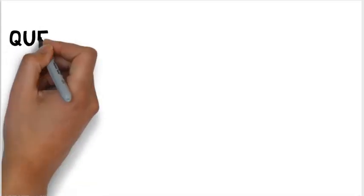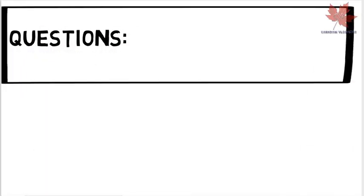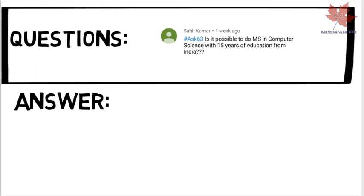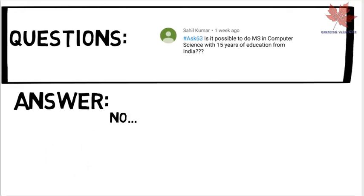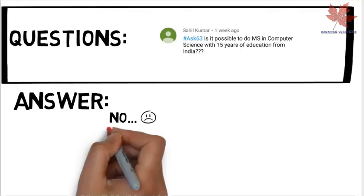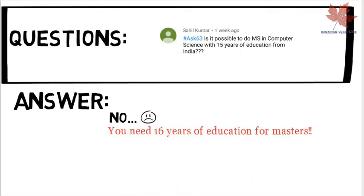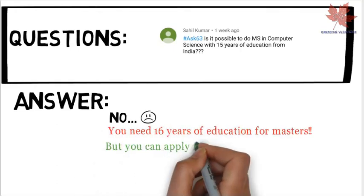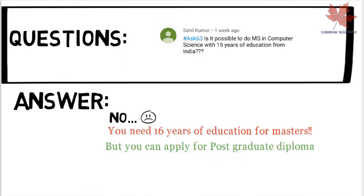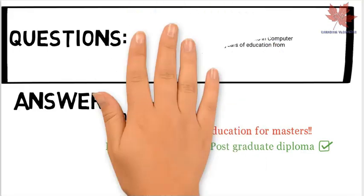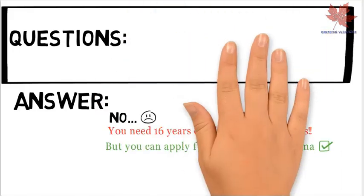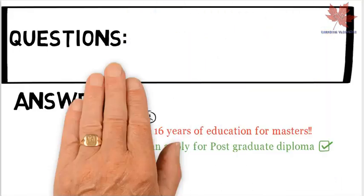The first question is from Sahil Kumar: is it possible to do an MS in Computer Science with 15 years of education from India? No, you need four years of a bachelor's degree to get admission into a master's — total qualification should be 16 years. However, you are eligible to apply for a Post Graduate Diploma or Advanced Diploma.